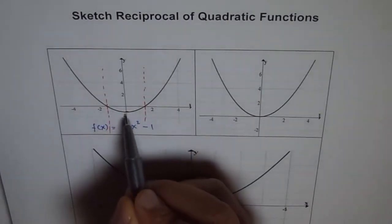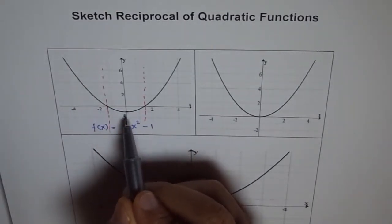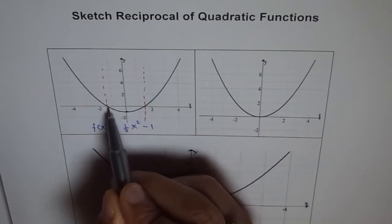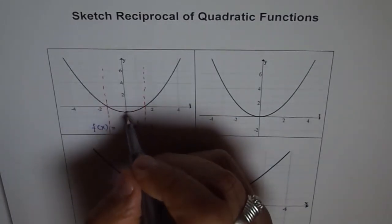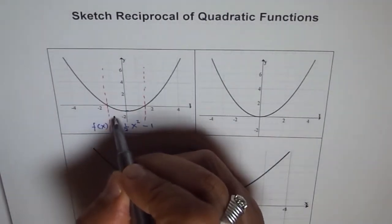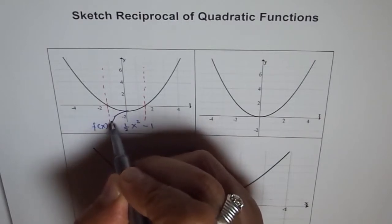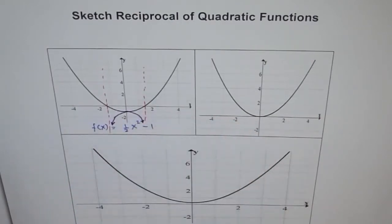All these points are less than minus one. So the reciprocals are going to be greater than minus one. And as you approach x-intercept from negative side, you are going to approach negative infinity for the reciprocal. And therefore, that part of the curve should be like this. This is half, it will be at two. So we get a couple of points here which will help us to draw.